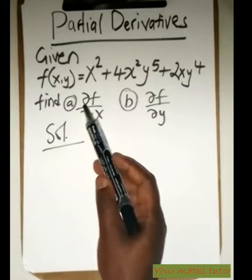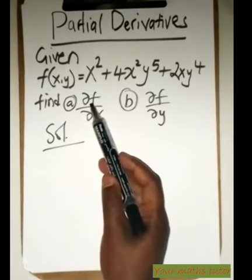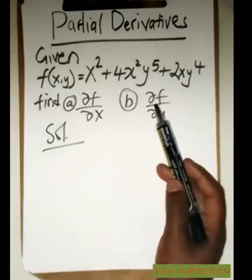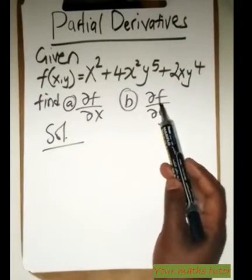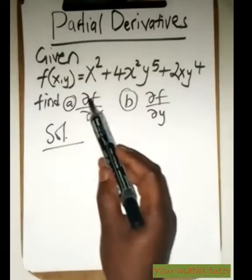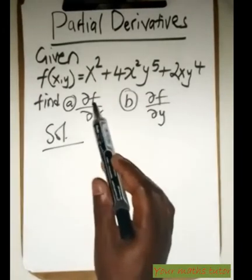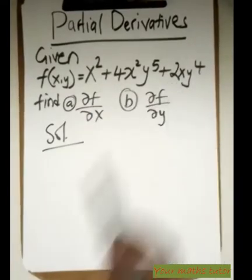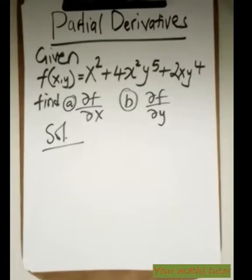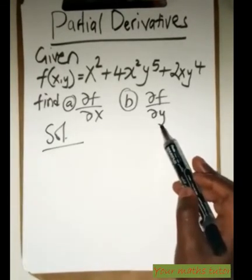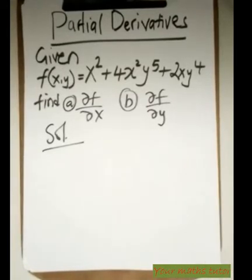If we write this symbol it means partial differentiation of the function f with respect to x, and here partial differentiation of the function f with respect to y. When you try to differentiate partial with respect to x, y behaves as a constant. Similarly, when you want to differentiate with respect to y, the x variable or variables behave as constants.